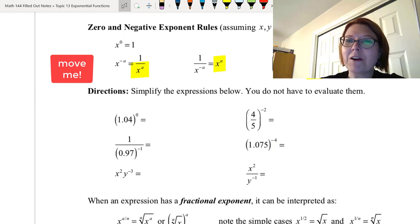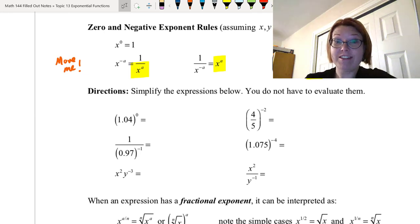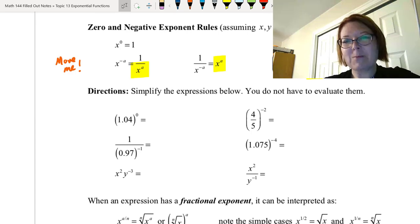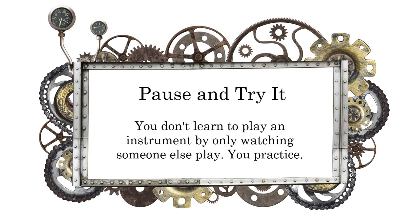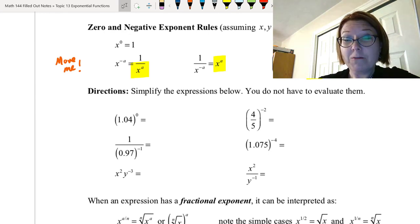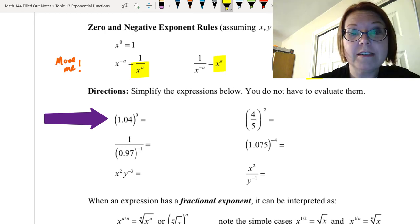Now it's your turn. Pause the video and simplify these six expressions. You don't have to evaluate them with a calculator — just rewrite them so there are no negative or zero exponents. We're back. The first expression is (1.04) to the zero power. Anything to the zero power comes out to 1, so that was an easy one.